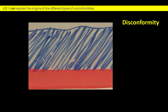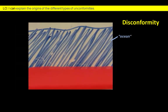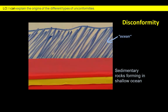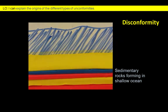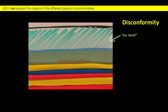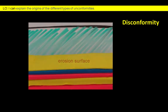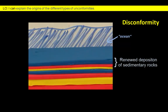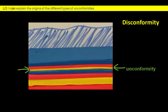Let's consider another situation where layers of sedimentary rock form under marine conditions. However, instead of tilting the layers we are simply going to uplift them, erode some of the uppermost layers, and then resubmerge them. After renewed deposition, new horizontal layers form that are parallel to those that formed earlier. So it can be difficult to tell where the unconformity surface is present. This type of unconformity is known as a disconformity.